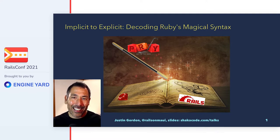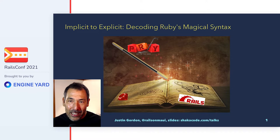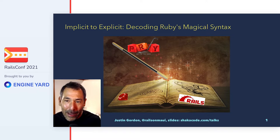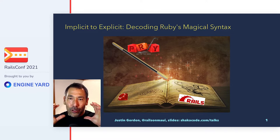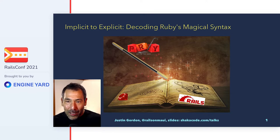One of the reasons why I want to give this talk is that I interview a lot of Rails developers. I'm hiring right now, and one of the problems I see is that a lot of Rails developers cannot explain how the Rails DSL works in terms of basic Ruby code. Once you understand how the Rails DSL is really just plain Ruby code, it's going to open up your understanding of what you're doing.